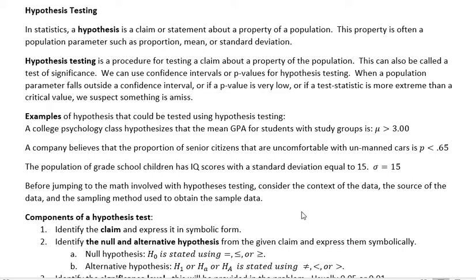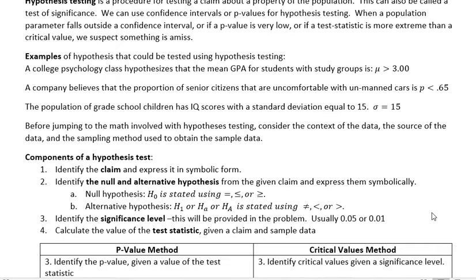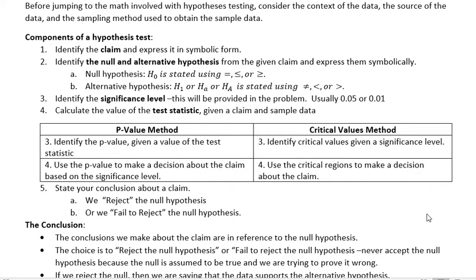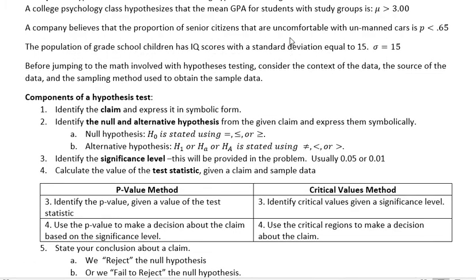Before jumping to the math involved with hypothesis testing, consider the context of the data, the source of the data, and the sampling method used to obtain the sample data. Here are the contents of a hypothesis test. Maybe reading through this with all this vocabulary is not going to be that useful, and the more useful piece will come when we look at the examples, but I want to put the steps out there. First of all, identify the claim and express it in symbolic form.